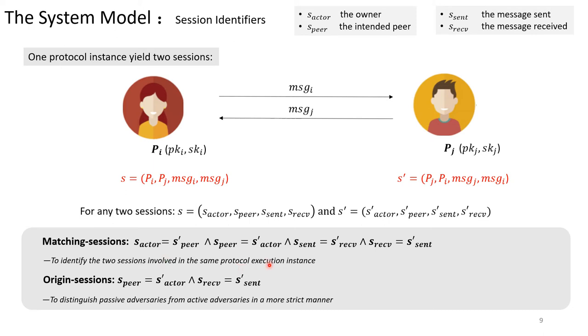While for session S, if the message it received is sent by S prime, then S prime is called its origin session. Note that this notion is used to distinguish passive adversaries from active adversaries in a more strict manner. You can imagine that the message replay attack is different from message modification attack in some cases. Here we also notice that matching session exists implies origin session exists, but not vice versa.